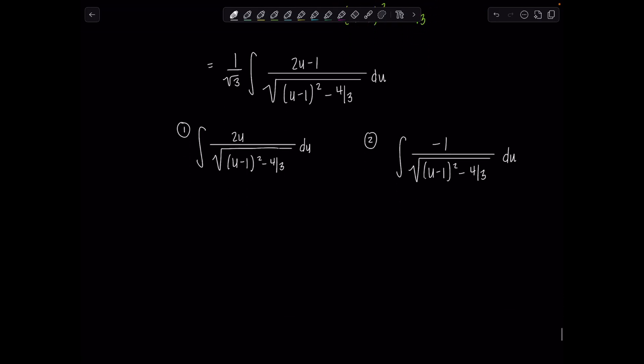Focusing on integral number 1, I would make another substitution. Let t be everything under the radical, u minus 1 squared minus 4 thirds. Then if I take the derivative dt, that would be 2 times u minus 1 du. So dt is 2u minus 2 du. And I don't exactly have that. I have 2u sitting in my numerator, but no minus 2.